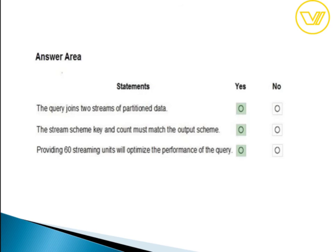For the Azure Stream Analytics partitioning question, all three boxes are yes. First: you can use a SQL extension of Stream Analytics to specify the number of partitions when reshuffling data. Second: when joining two streams, both must have the same partition key and partition count. Third: 10 partitions × 6 streaming units = 60 streaming units, which is acceptable. Note that the streaming unit count must be adjusted to physical resources available; 6 SUs per partition is generally a good number.